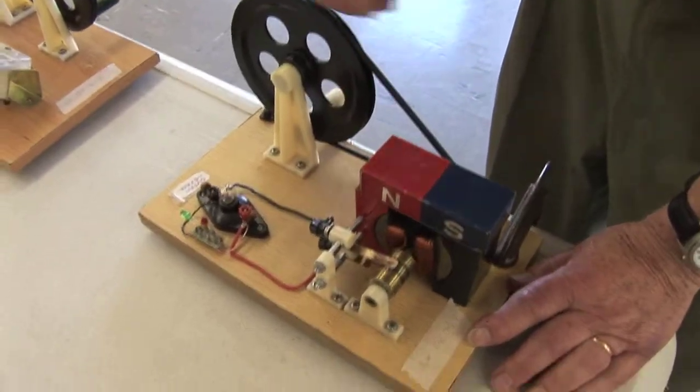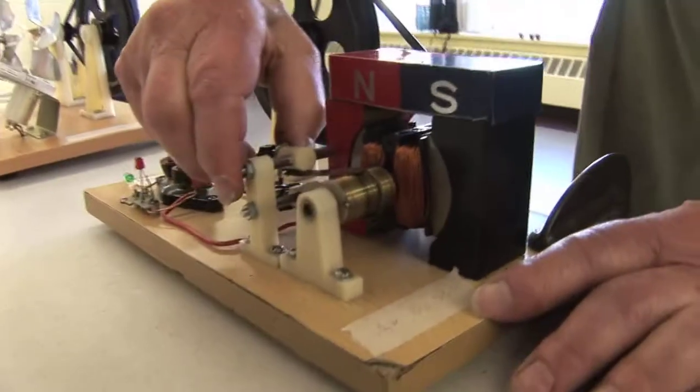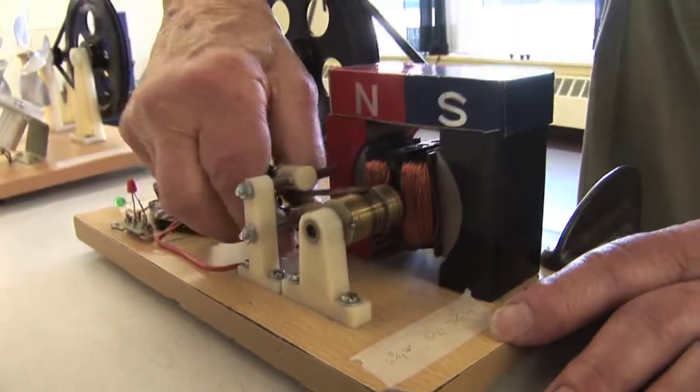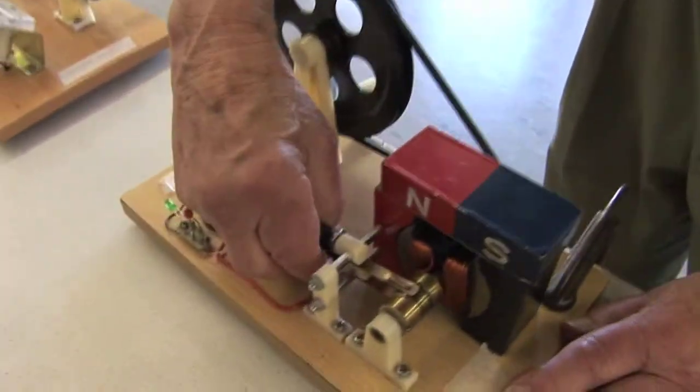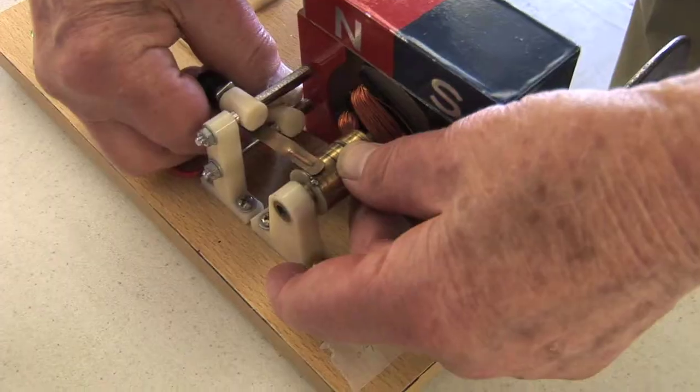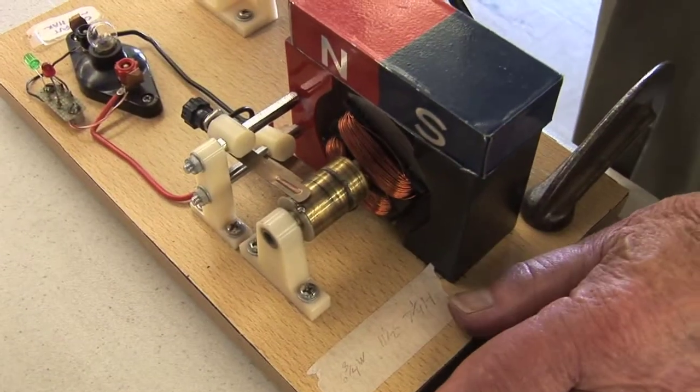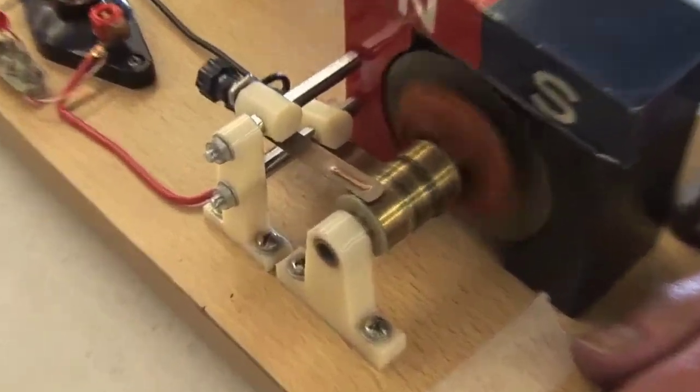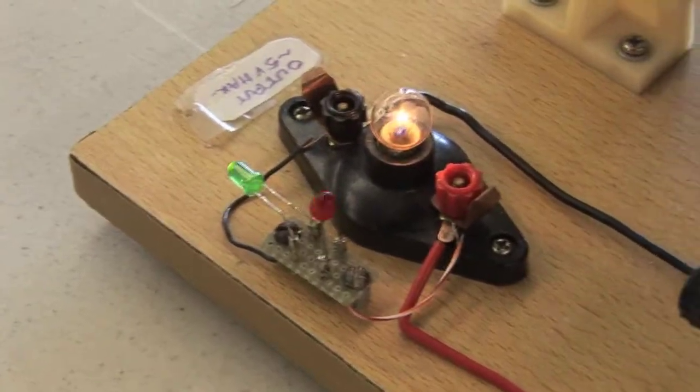If I want AC, I move over the contacts so that we have what we call slip rings. Now you notice that both the red and the green light simultaneously because it's AC.